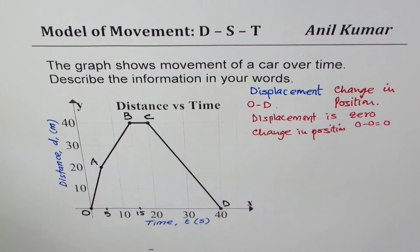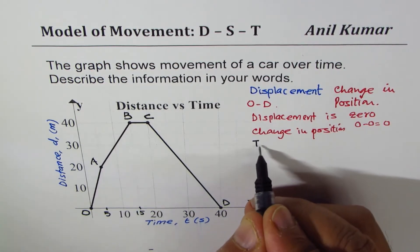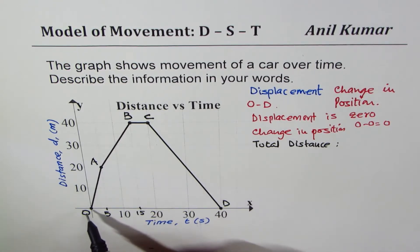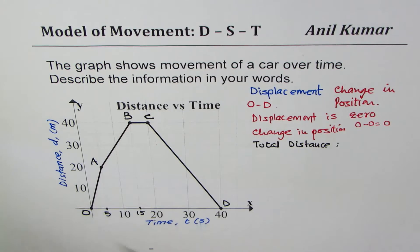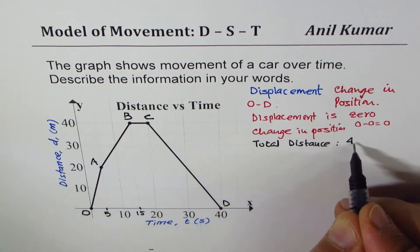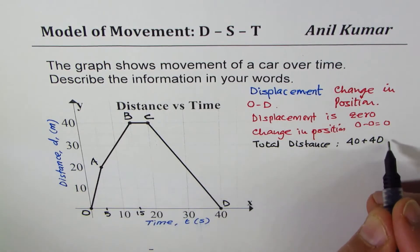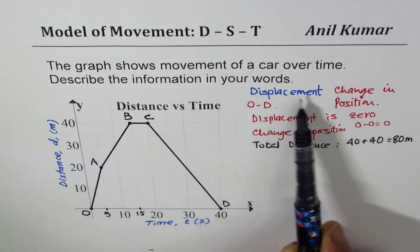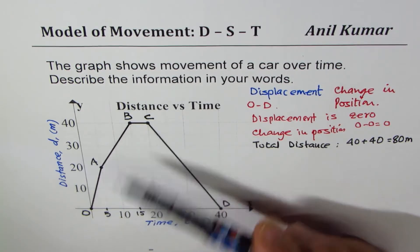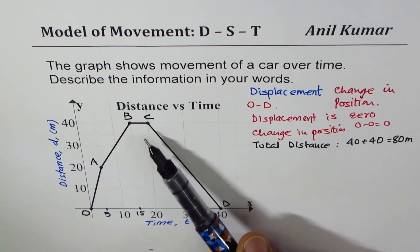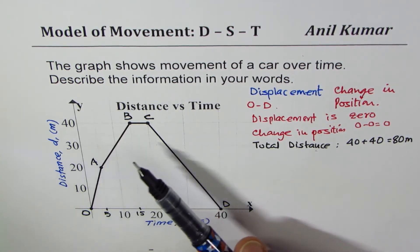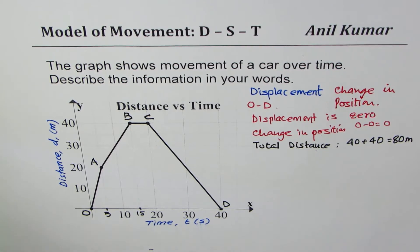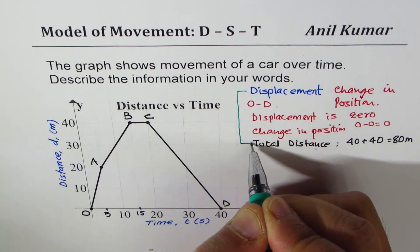The total distance covered is: the car goes 40 meters away and returns 40 meters, so total distance is 40 plus 40 which is 80 meters. When talking about change in position, use displacement. Distance is never negative — it is always positive — and when a car is moving, total distance can never be 0, however displacement can be 0.